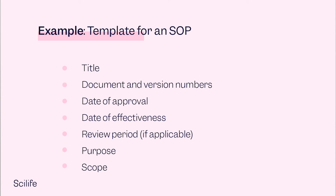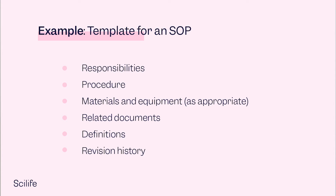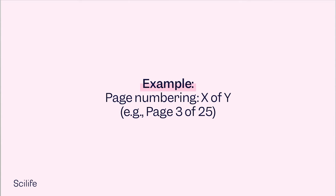A recommended SOP template includes: Title; Document and version numbers; Date of approval; Date of effectiveness; Review period if applicable; Purpose; Scope; Responsibilities; Procedure; Materials and equipment as appropriate; Related documents; Definitions; and Revision history. For other types of documents — work instructions, protocols, forms, etc. — different contents can be used depending on the intended use. All documents should have a unique identification number as well as a version number to avoid duplication. Pages in the master document should be numbered in X of Y format, for example page 3 of 25, to easily detect whether any pages are lost or misplaced.